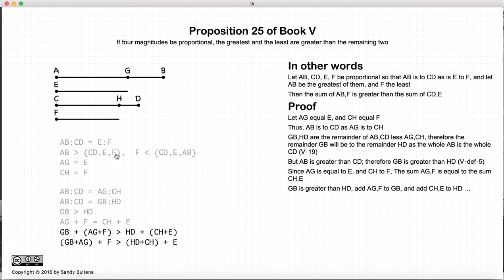But what is GB plus AG? GB plus AG is just equal to AB and HD plus CH is just equal to CD. So if we rewrite this equation again, we have that AB plus F is greater than CD plus E.